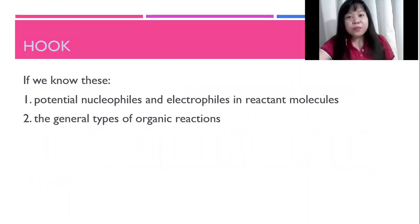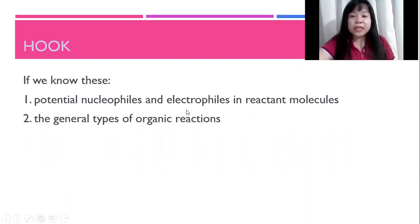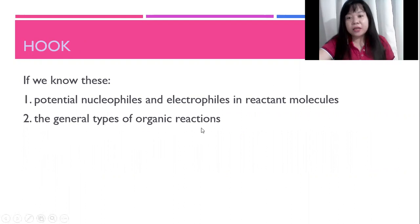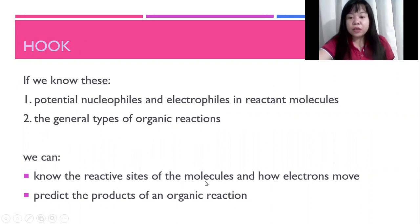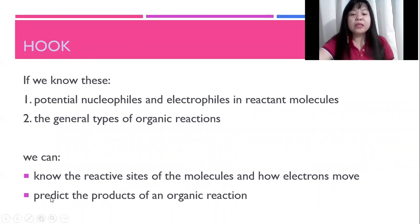In the previous modules, we have been learning two things: first, the potential nucleophiles and electrophiles in reactants, and second, the general types of organic reactions. If we know these, then we are able to identify the reactive sites of the molecules, how electrons move in a chemical process, and predict the products of an organic reaction.